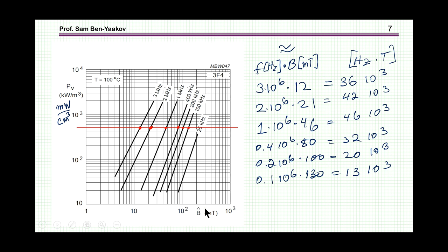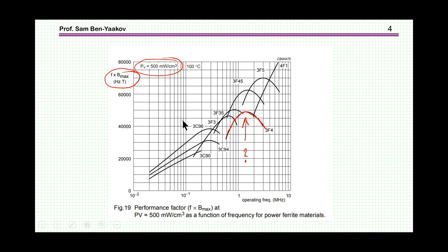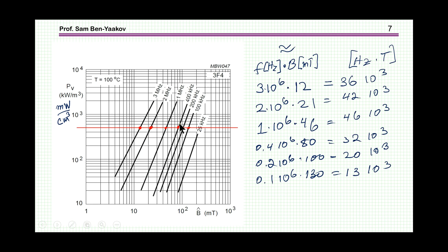So now we can reconstruct this plot and I'm looking at 3F4. I'm talking about the limit of 500 milliwatt per centimeter cube. The crossing here between frequency and this value is the B that I'm looking for, and then I multiply it by frequency. So each point here is the frequency times B hat for this power level. I've done it for all these. These are the numbers for these crossings here.